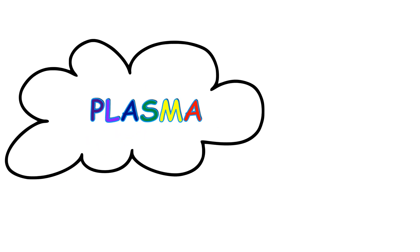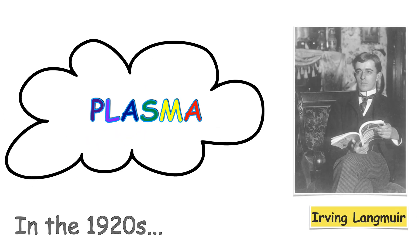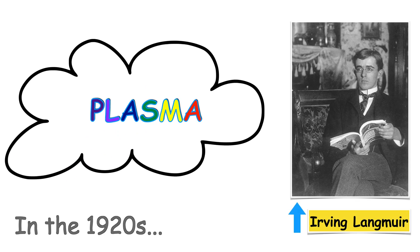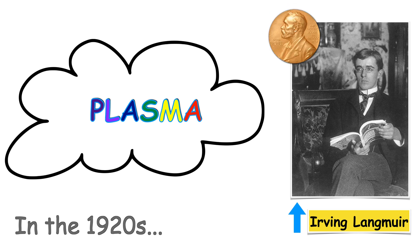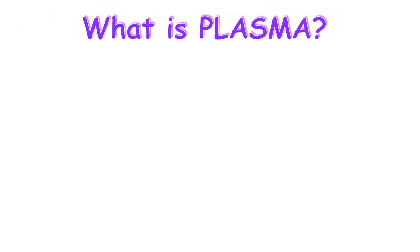The word plasma was first used in the 1920s by Irving Langmuir, a chemist and physicist who won the Nobel Prize for chemistry in 1932. He named it plasma because it reminded him of blood plasma.